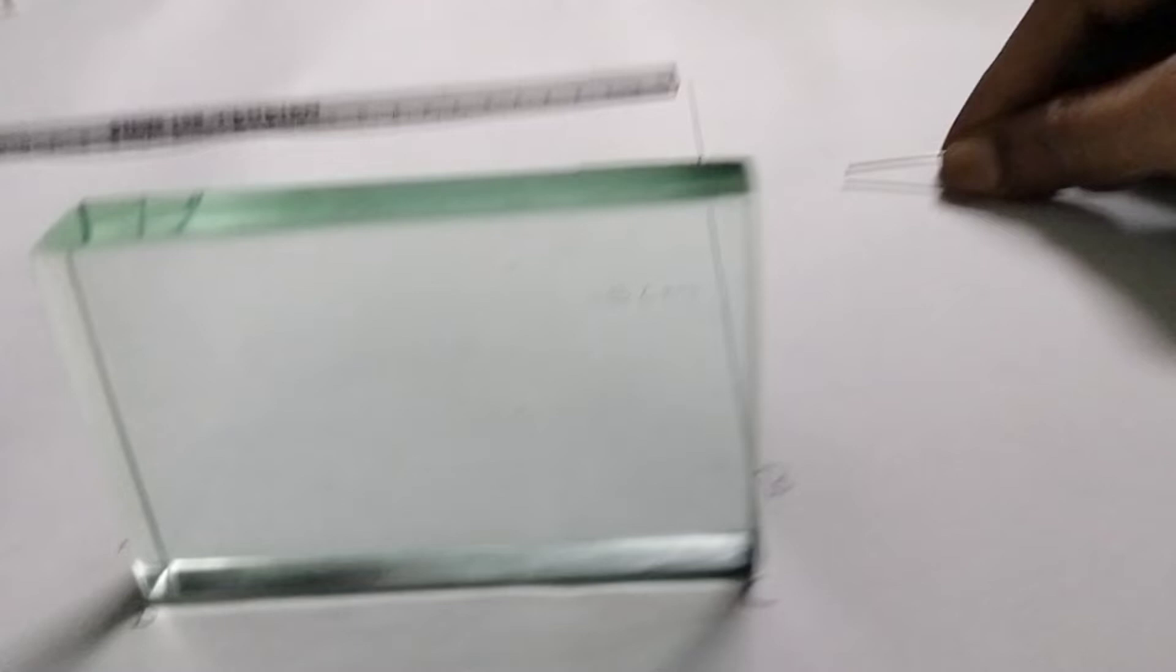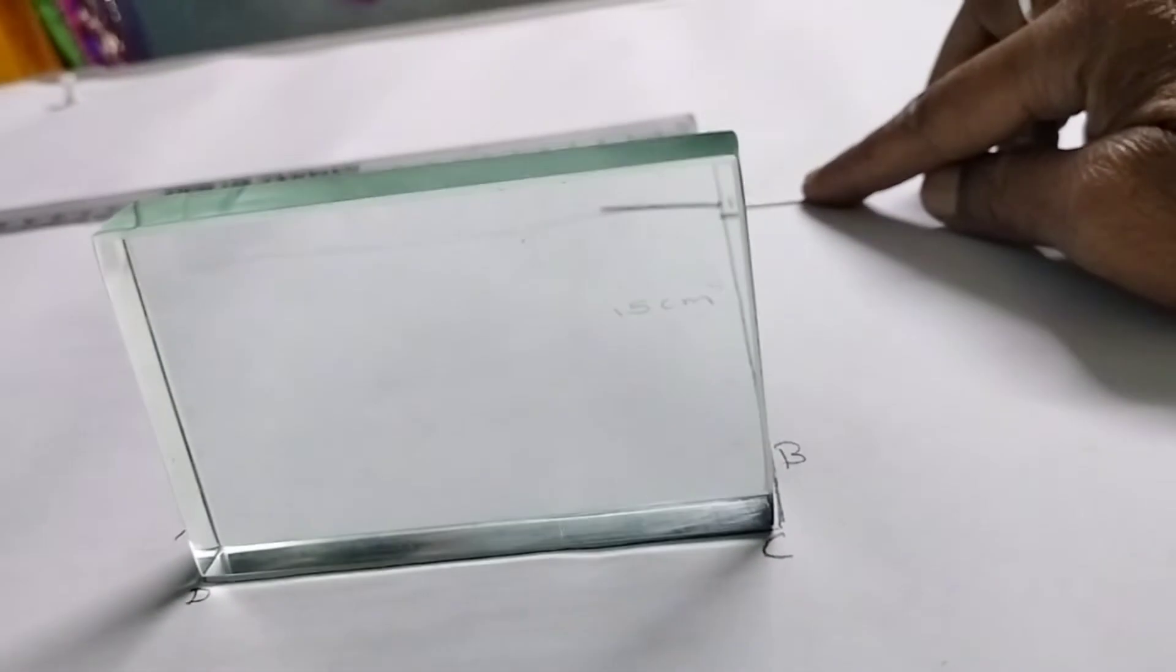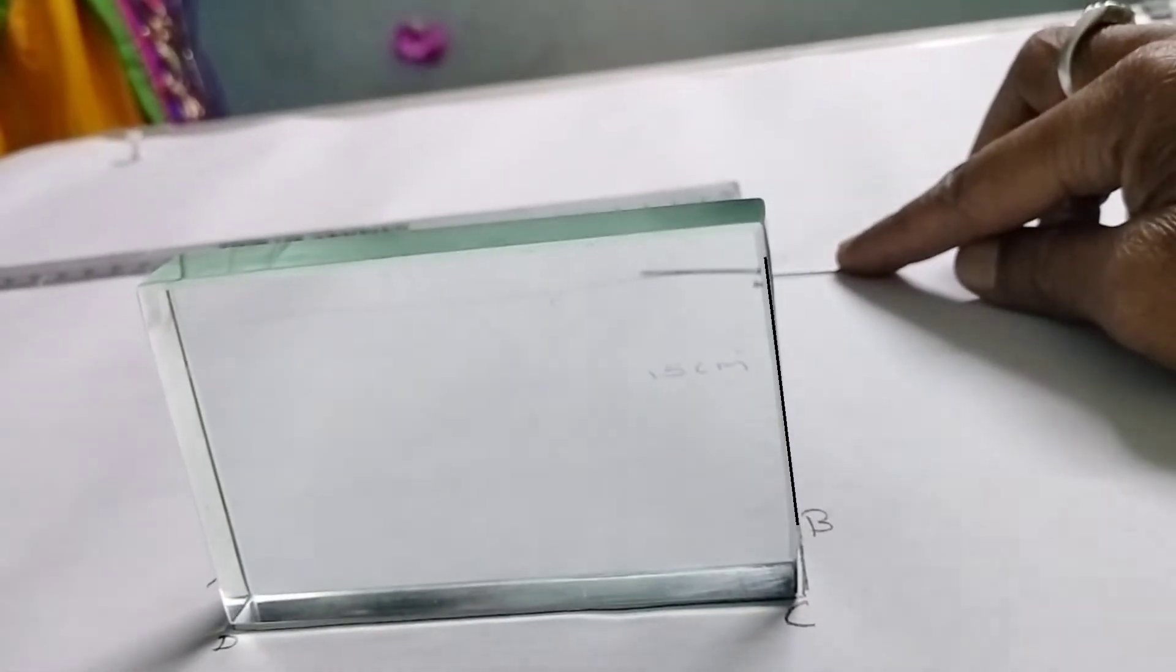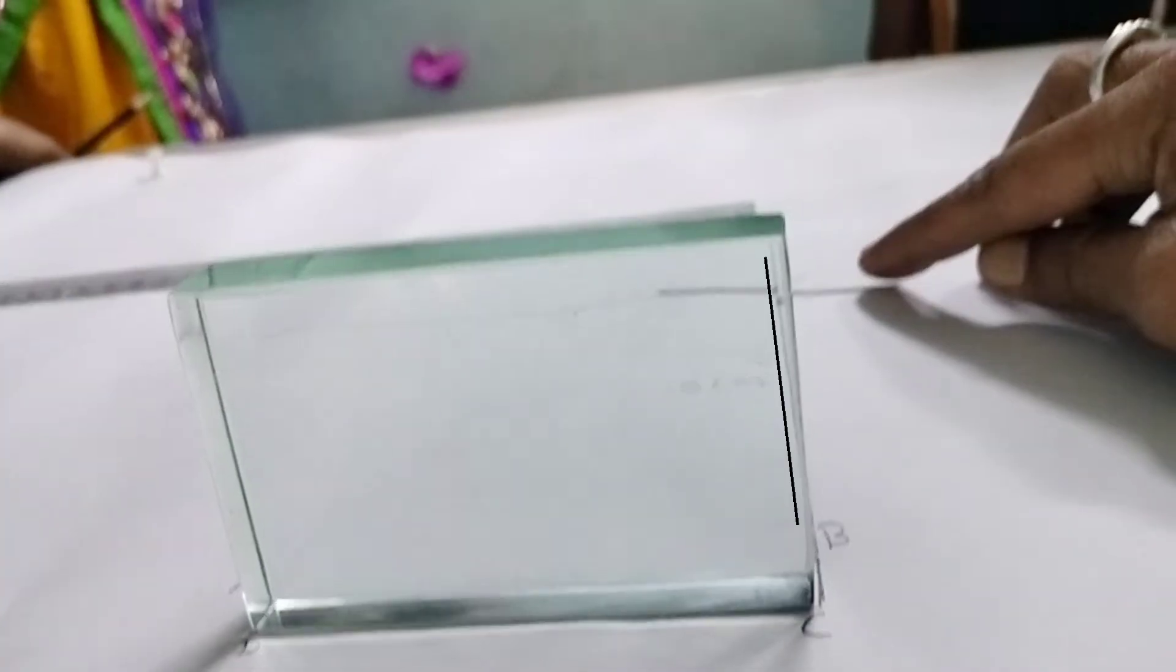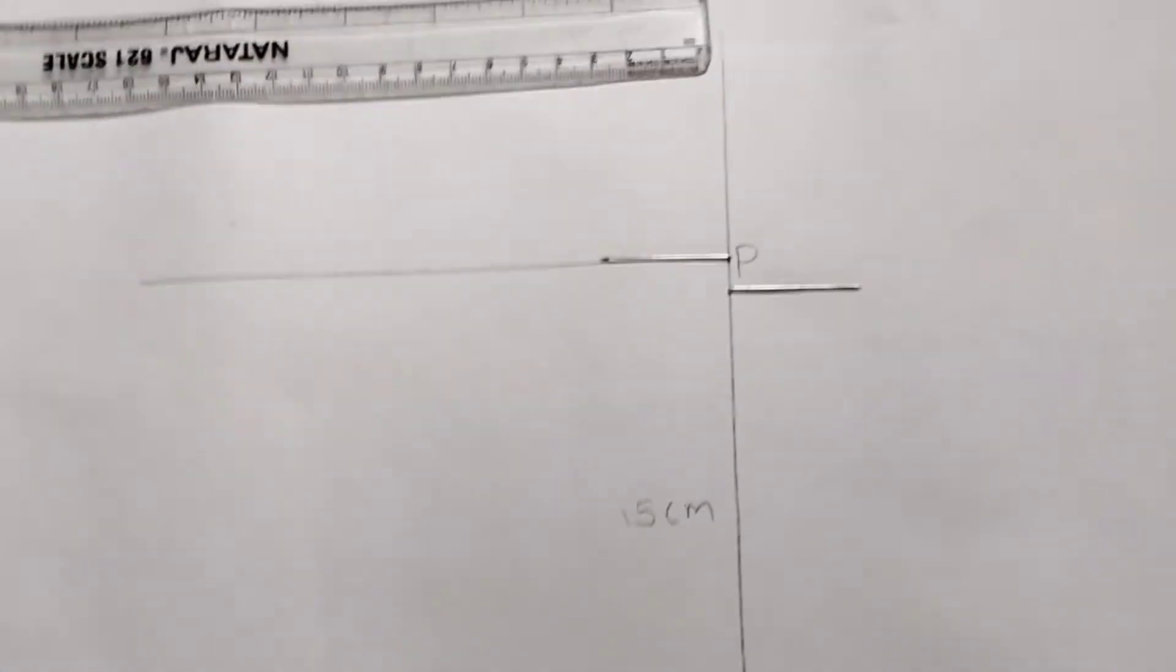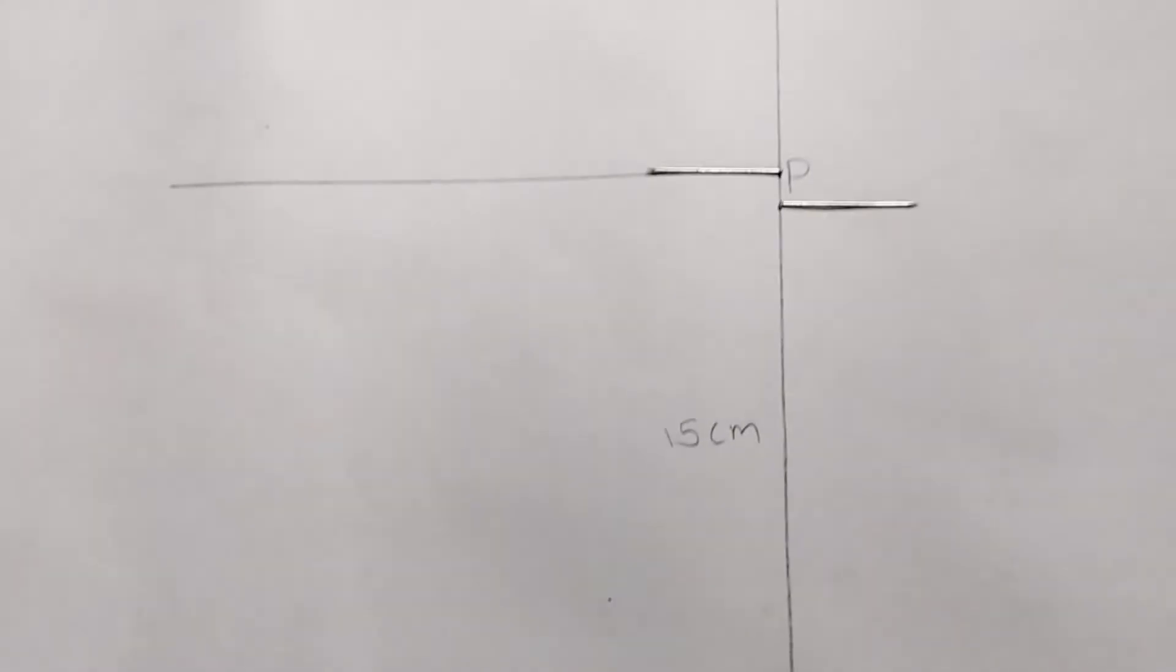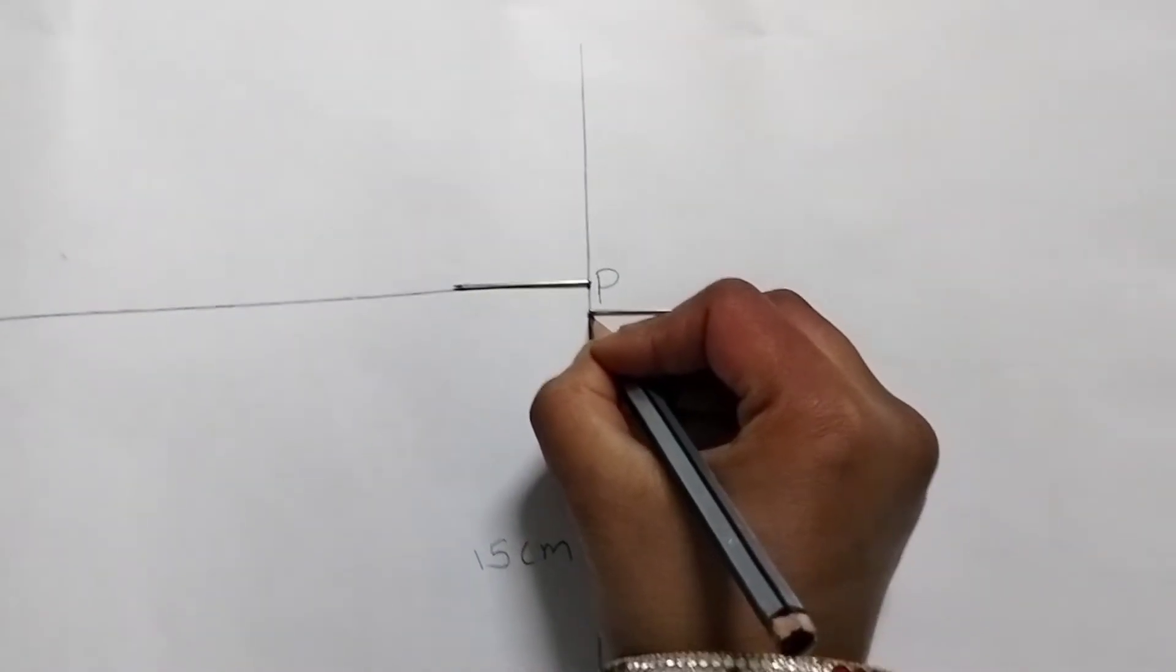Now take another needle and by seeing at the first needle from the other side of the slab, try to keep the needle so that it forms a straight line with the first needle. Remove the slab and observe the position of the needles. They are not in the same line.